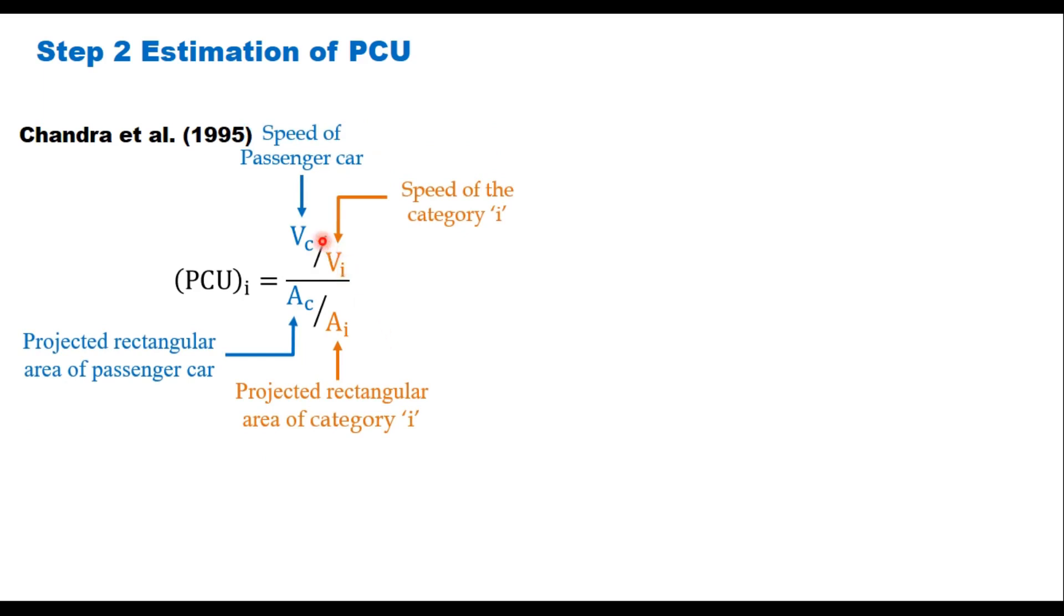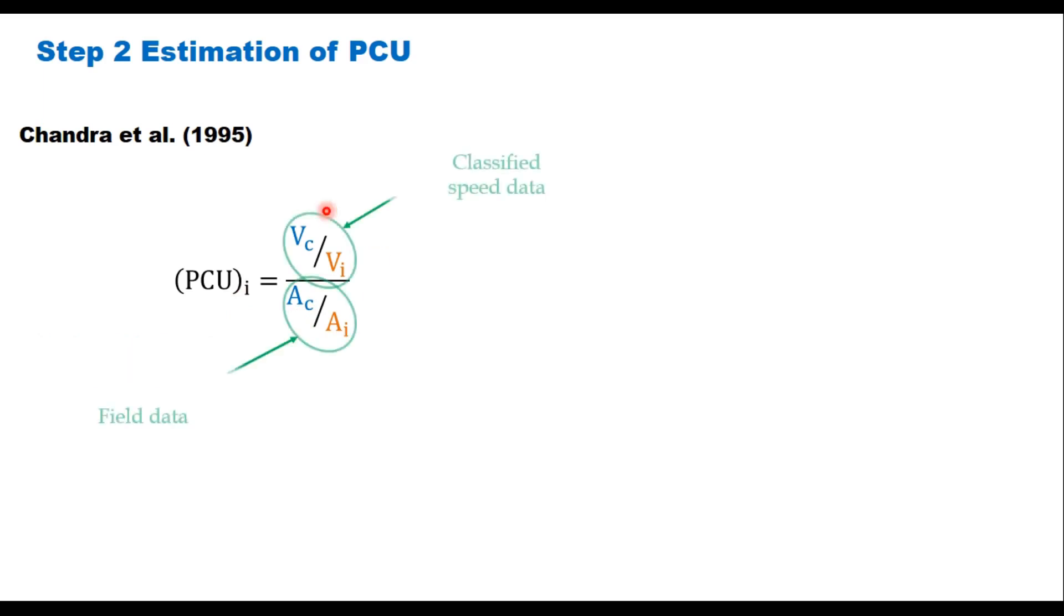Now here this VC and VI are the speed of passenger car, that is your standard car SC, and that is the speed of vehicle category I for which you are finding the PCU factor. This VC upon VI can be obtained from classified speed data which you did earlier.